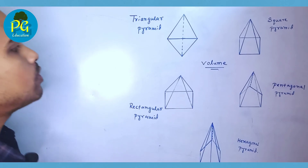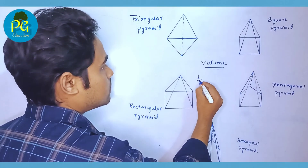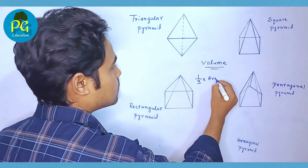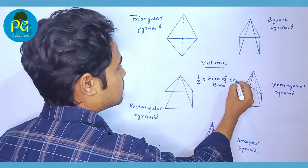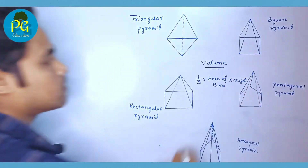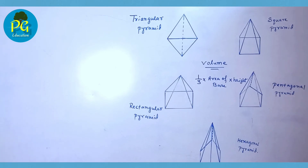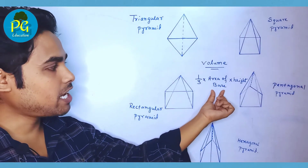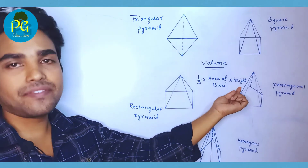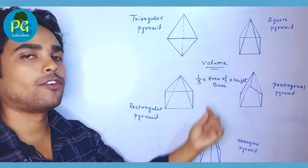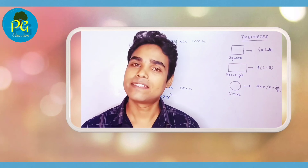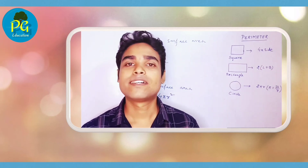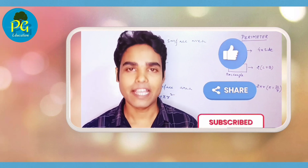Now for volume: the formula for the volume of a pyramid is (1/3) × area of base × height. We already know how to find the area of the base, and the height is given, so by this formula we can easily find the volume. For more such videos, please like, share, and subscribe. Thank you.